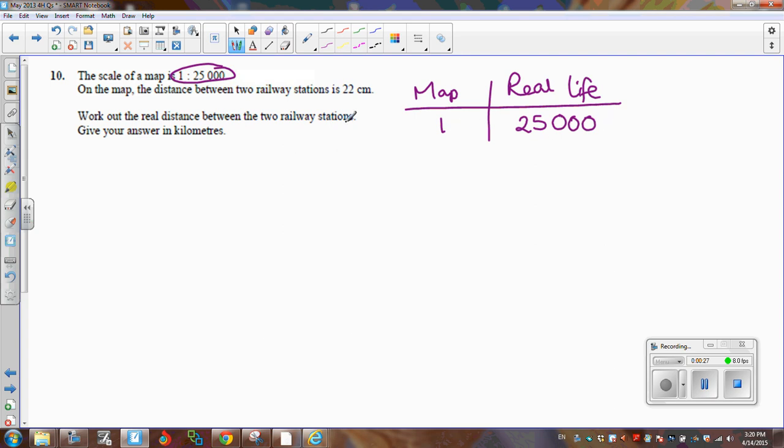So if you've got 22 centimeters on the map, then in real life, that is going to be multiplied by 25,000, and that's going to give us centimeters, which is 550,000 centimeters.